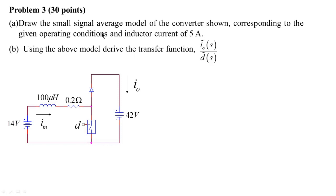To draw any small signal model, we first need to solve the steady-state switching circuit or the full average circuit to determine the voltage port voltage magnitude, the current port current magnitude, and the duty ratio D, which is not given in this problem and needs to be calculated. These three parameters — VVP, ICP, and uppercase D — determine the operating condition under which the circuit is linearized to get the small signal model.